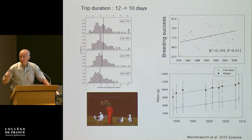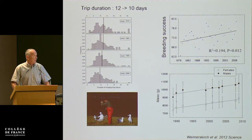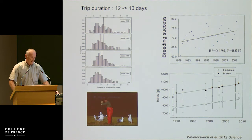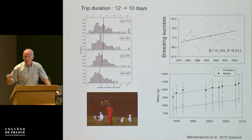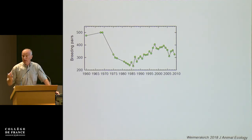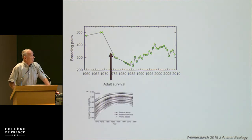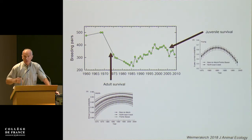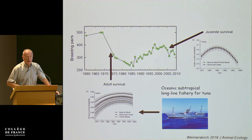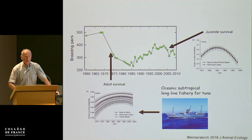Very important changes have occurred in the distribution and travel speed of the birds. The duration of the trip — the time taken to find food at sea — has decreased by 20%. Breeding success has increased and the mass of the birds has increased by 1 kilogram, which is huge — they have gained 1 kg over the past 20 years. So overall, for wandering albatrosses, climate change has been positive: breeding success has increased and they are traveling faster and in better condition. But this still doesn't explain why the population has decreased.